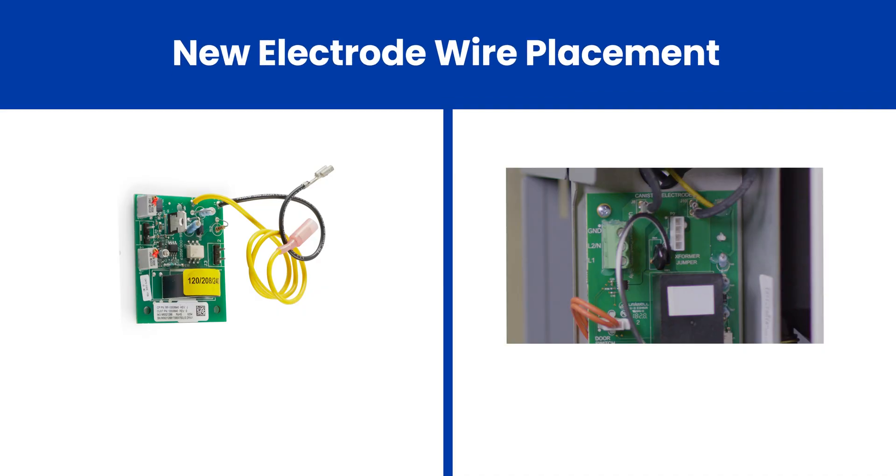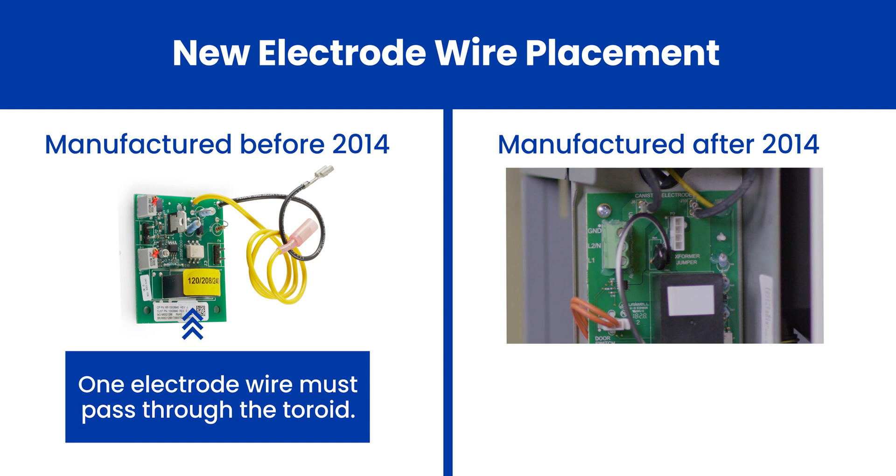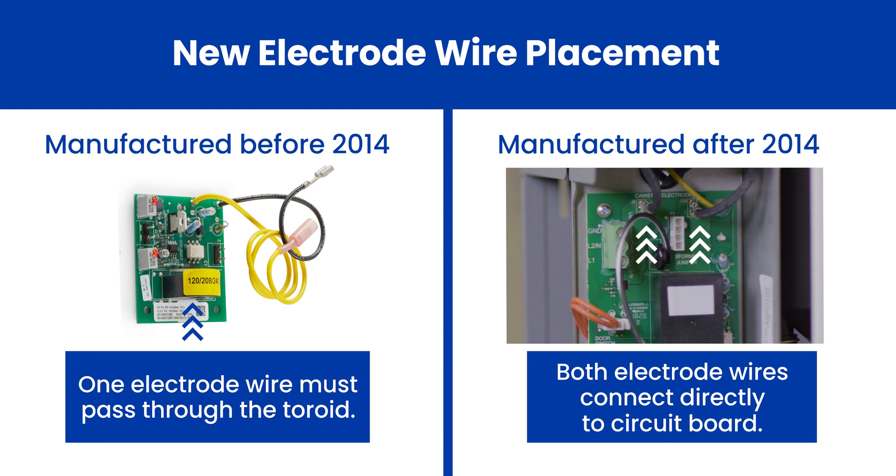For models manufactured prior to November 2014, one of the two new electrode wires will be installed through a large metal ring called the toroid. For models manufactured after November 2014, both wires will plug directly into the printed circuit board.